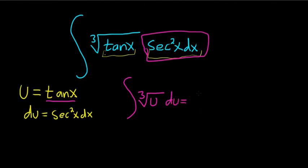You can write the cube root as u to the 1 over 3, right? There's a 1 here, so it's 1 over 3, 1 over 3, 1 over 3, du.